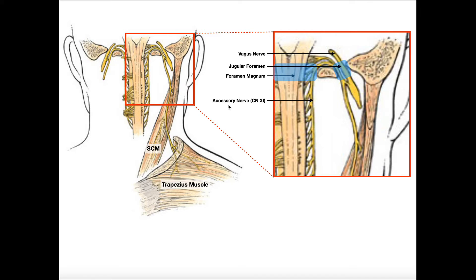A sensory cranial nerve runs from some special sense area — generally like the eyes or the nose — into the cranium, and it has to penetrate through the skull, usually through a foramen, to get to the brain. If you are a motor cranial nerve, you have to exit the cranium. Every single motor cranial nerve — hypoglossal, vagus, oculomotor — exits the cranium in some form or fashion. Every single sensory nerve enters the cranium through some foramen, and mixed nerves have both.